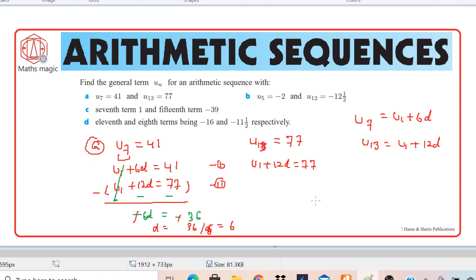Now we can substitute this value of D in any one of the above equations and we can find U1. So let's find U1. It's very simple. We have U1, we can use equation 1. So it becomes U1 equals 41 minus 6D. Therefore, 41 minus 6 times 6, so it becomes 41 minus 36, which is 5. We got D equals 6 and U1 equals 5.